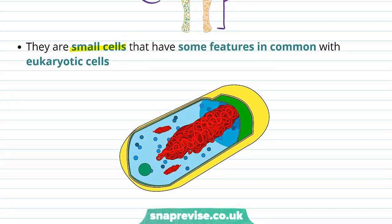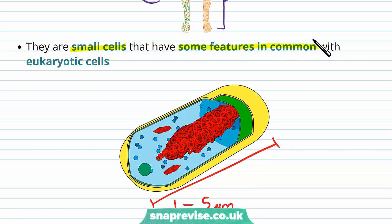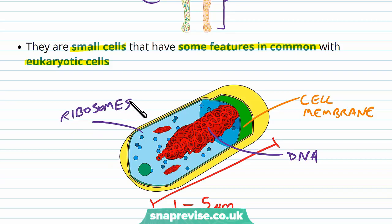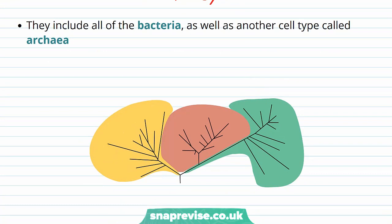Prokaryotes are very small cells, usually only about one to five micrometers in length, as opposed to a eukaryotic cell which can be several tens of micrometers. They do have some features in common with eukaryotic cells — we theorize that life evolved from very common ancestors, so it's expected that all cells share some features. Some things we can see in eukaryotic cells as well include the presence of a cell membrane, genetic material in the form of DNA, and certain organelles like ribosomes.